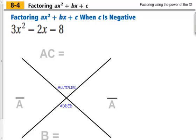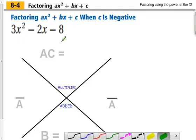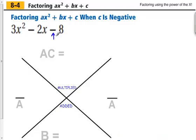Okay, so we have looked at examples that have dealt with our c value as being a positive number. Now we're going to look at it in terms of our c value being a negative number.